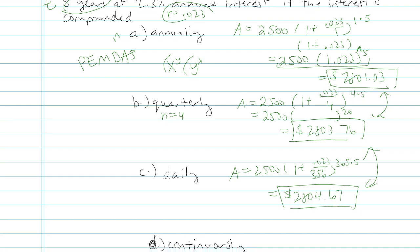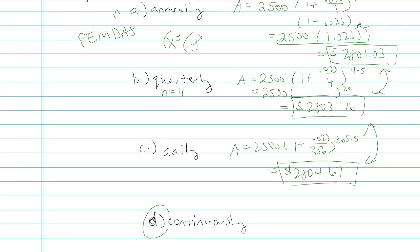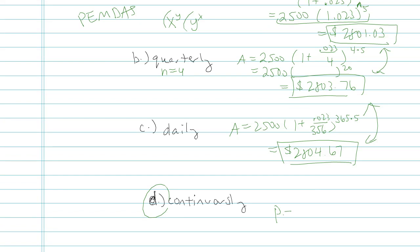Last but not least, this part D says compounded continuously. If the problem you're doing says compounded continuously, you're in the wrong pen cast. Compounding continuously is when you're going to be doing this PERT formula, where you're using the letter E.